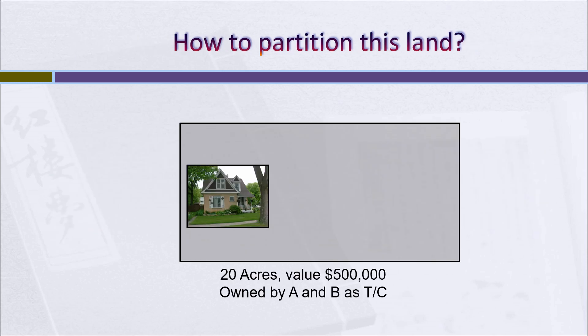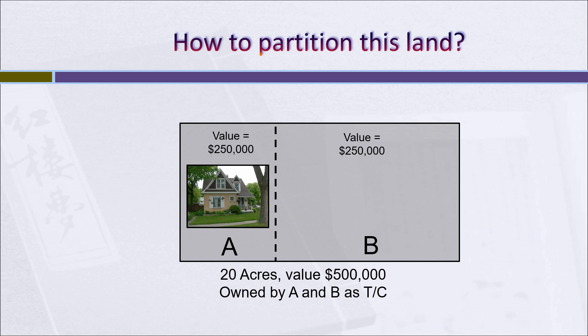Here's an example showing how partition in kind, even if there's a house involved, might be feasible. The property is a large 20-acre parcel worth half a million dollars, with a house at the west end. If we put a boundary line down the middle, we'd get two parcels of completely unequal values because one is vacant and the other has the house. Instead, we can put the boundary closer to the house so the two parcels end up equal in value. A might get the parcel with the house, worth $250,000, and B gets more acreage but no house — also worth $250,000. We'd probably need an appraiser to testify in court about where the boundary should be to equalize the two parcels, but it is feasible in this situation.